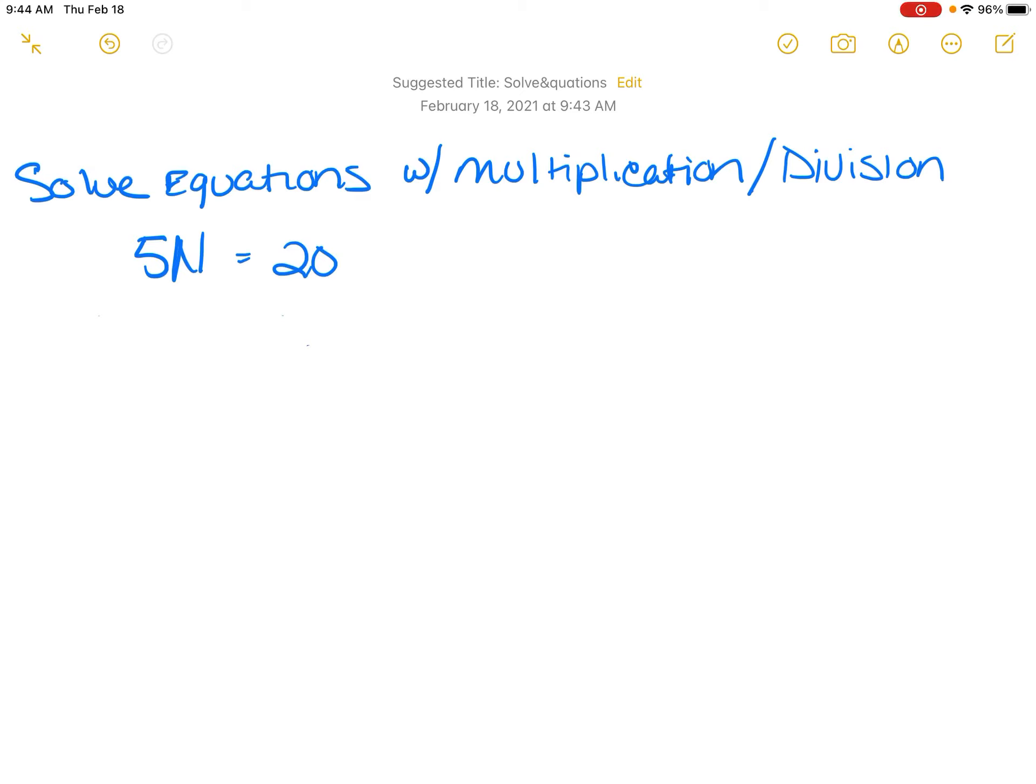So the first thing we're going to do is, here we are, the equation is 5n is equal to 20. So our first step is to isolate the variable. So let me get my pen going here. I have it on eraser mode. Here we go.